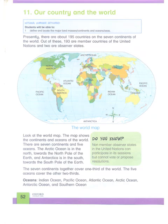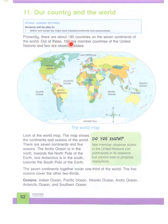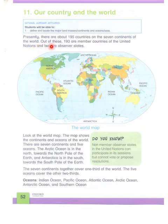Today we shall go over the 11th part: our country and the world. Presently there are about 195 countries on the seven continents of the world. Out of these, 193 are member countries of the United Nations and two are observer states.